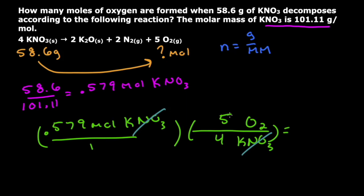And when I multiply this number here times five divided by four, I'm going to get 0.724.